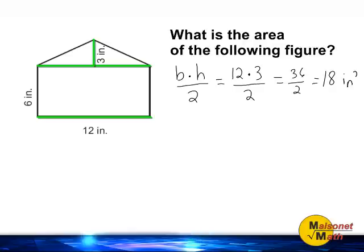Now we have to calculate the area of the shown rectangle. This side of our rectangle is six inches and this side of our rectangle is twelve inches. Multiplying six by twelve will give us the area of our rectangle and six times twelve is seventy-two. So the area of our rectangle is seventy-two square inches.